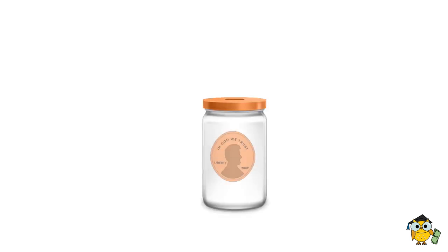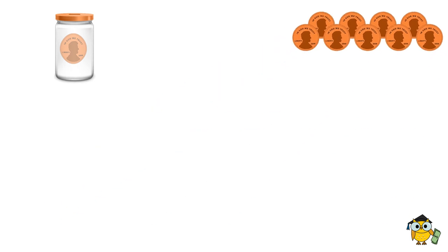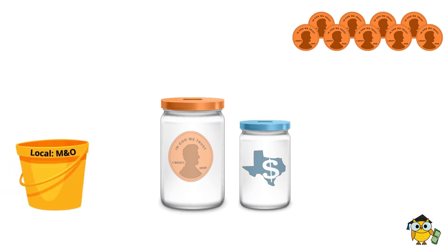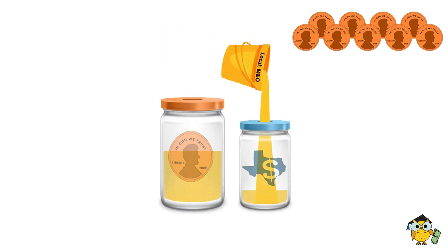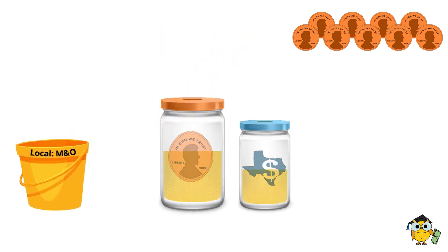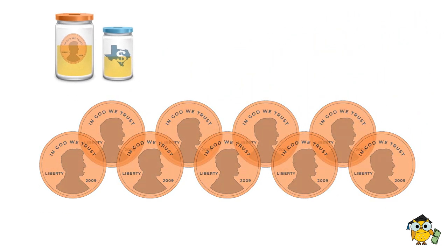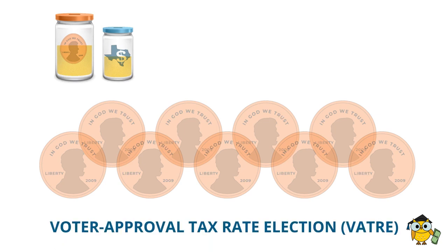The last jar of revenue in the M&O tax rate is for the tier two copper pennies. A school district has nine allowable copper pennies. Differing from golden pennies, these copper pennies are subject to recapture. Current estimates for Leander ISD are that for every penny, the school district would keep 60% and the other 40% would be put into the recapture jar and sent back to the state. Leander ISD currently does not have any copper pennies — to access these, a VATRE would be required.